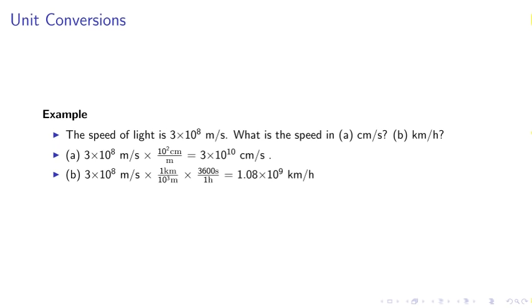Unit conversions. Example: The speed of light is 3 times 10 to the 8th meters per second, approximately. What is the speed in A centimeters per second and B kilometers per hour? Part A: 3 times 10 to the 8th meters per second times 100 centimeters per meter equals 3 times 10 to the 10th centimeters per second.